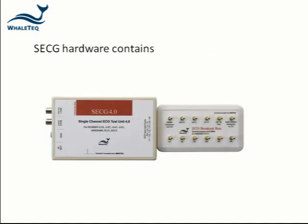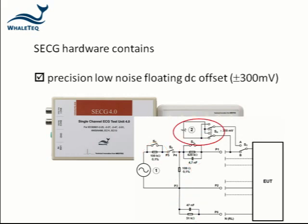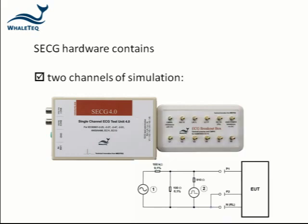The hardware box contains resistor-capacitor networks as required by the standard, a precision low noise floating DC offset of plus or minus 300 millivolts, relay switching including allowing the user to select the output electrode, and two channels of voltage simulation.